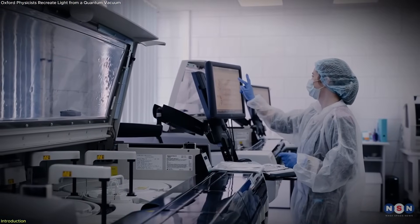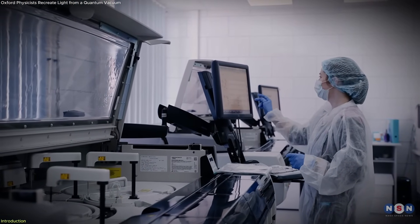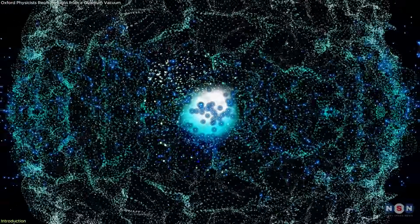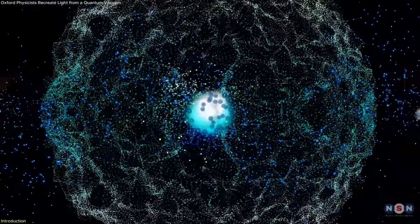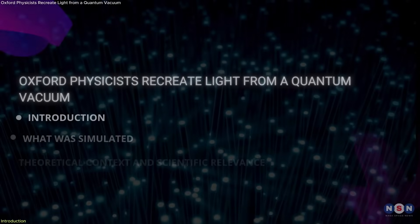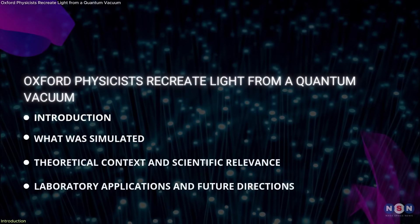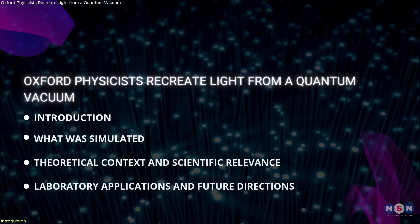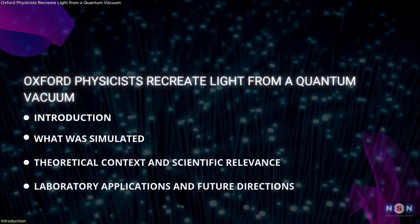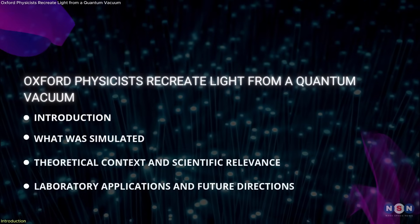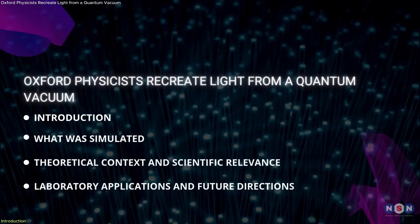They didn't just imagine it. They modeled it in real time, revealing how fluctuations in space could be amplified to form detectable photons. In this episode, we'll explore what this effect really is, how physicists built the simulation, and why it's a crucial step toward understanding one of the most counterintuitive predictions of modern physics.